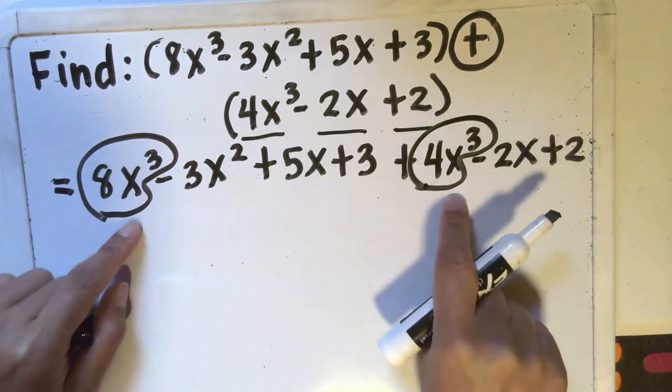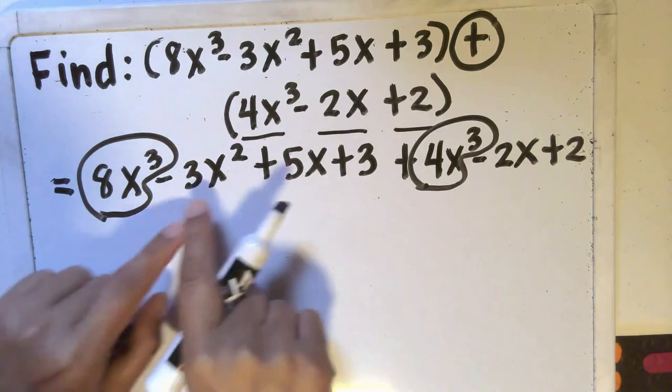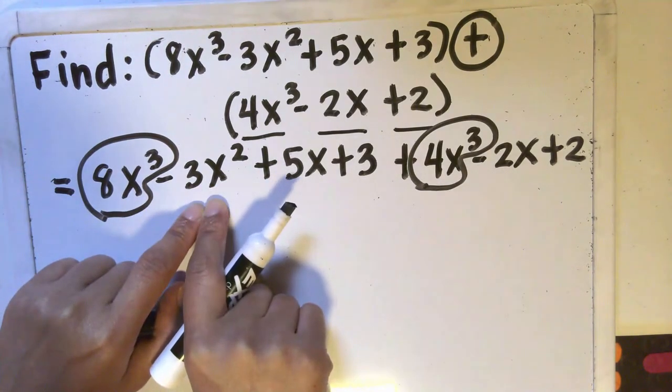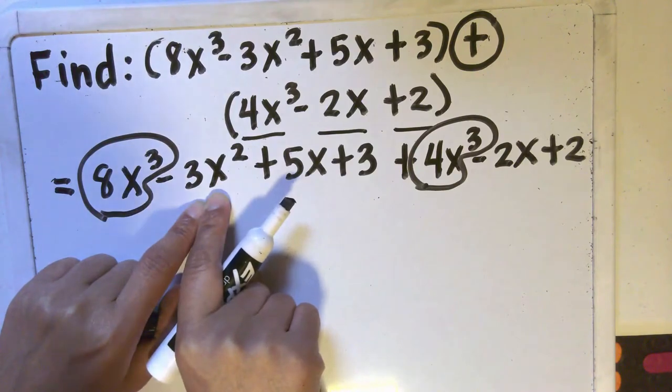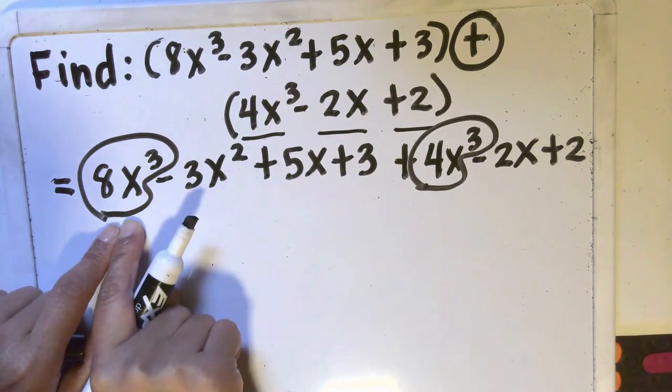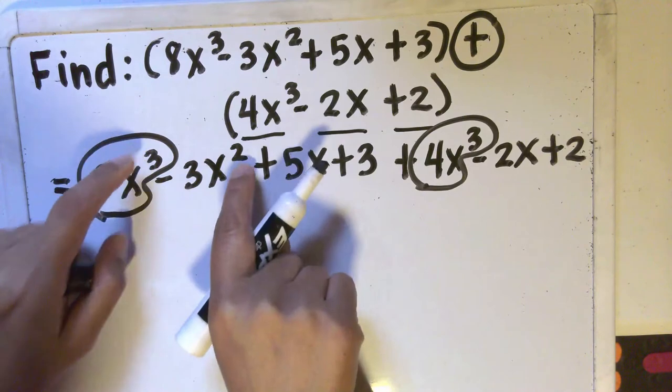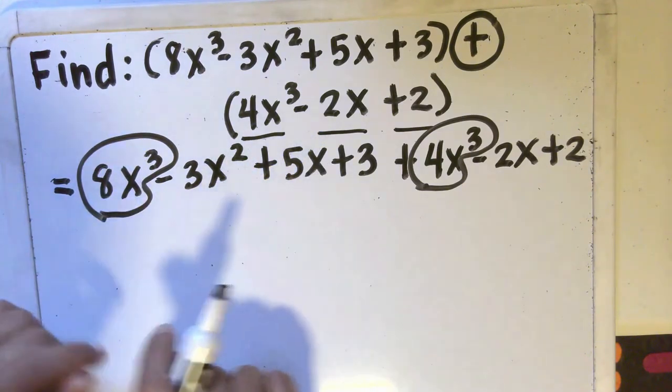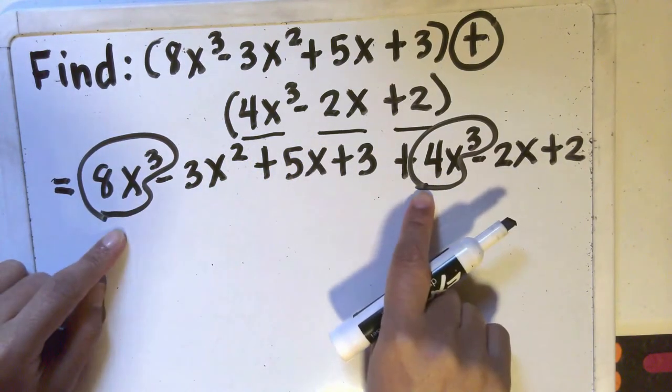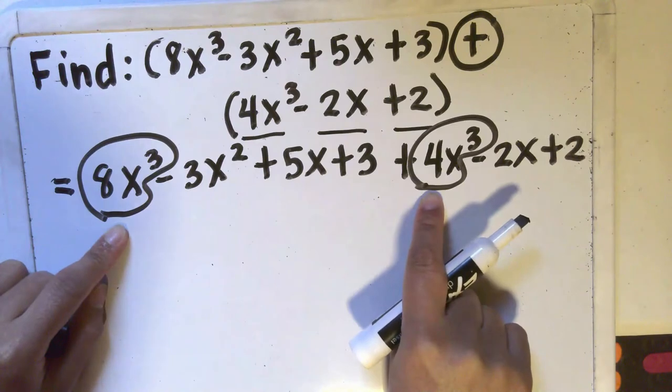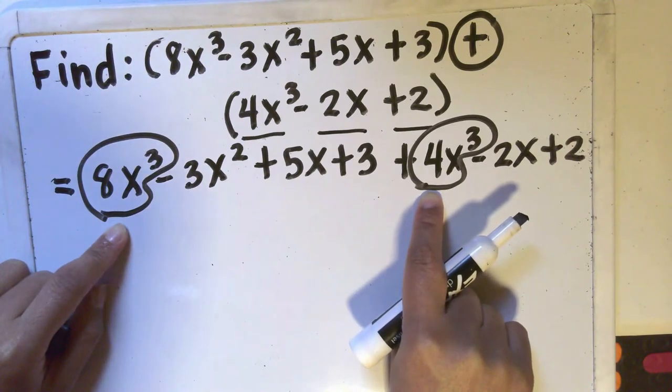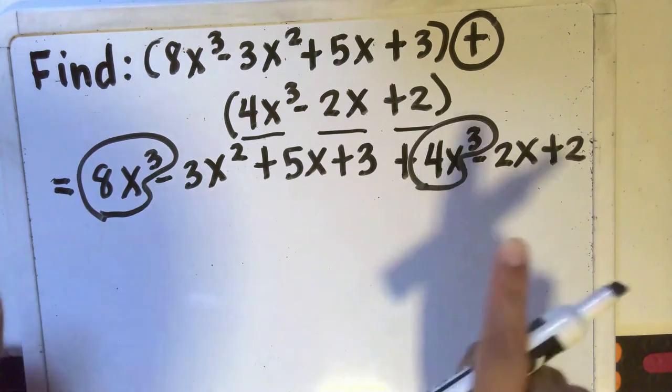For example, 8x³ and 4x³ are like terms because they both have x³. 8x³ and 3x² are not like terms because this term only has x² while this term has x³. So the exponents and the letters have to be the same. Anyway these two are like terms so I will combine them. I have to keep in mind the rule in adding integers when I'm combining like terms.